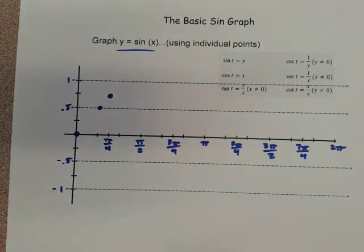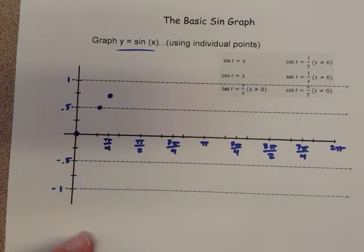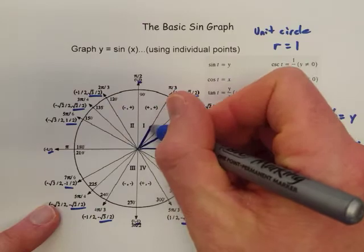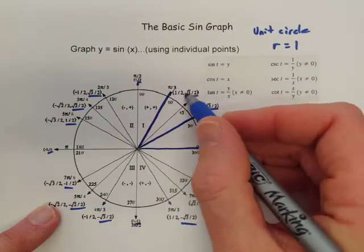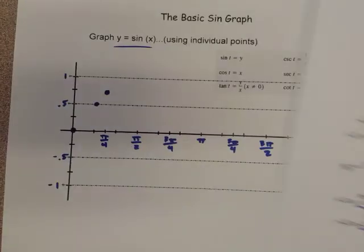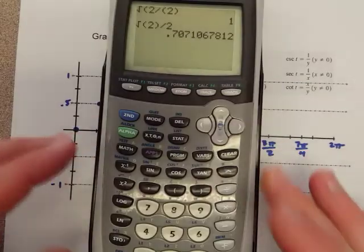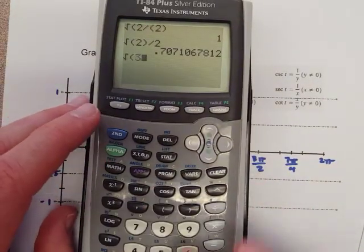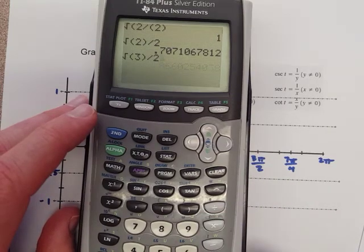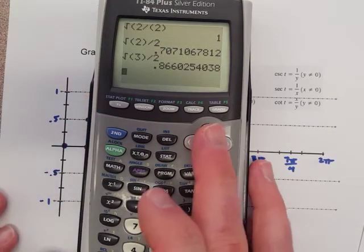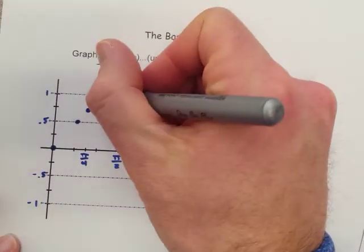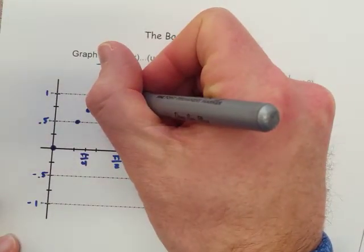Okay. Then pi over 3, the 60 degree angle. Now our y value is square root of 3 over 2. All right. And so I'll try this again. Hopefully it'll be a little bit more successful this time. Square root of 3 divided by 2 is about 0.866. So maybe that's maybe right about here.